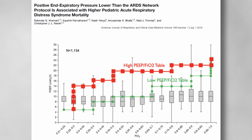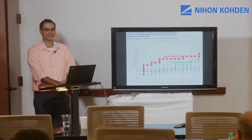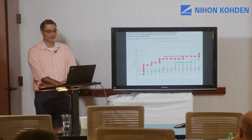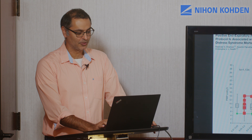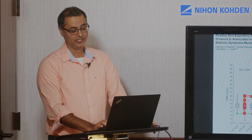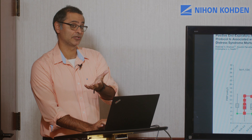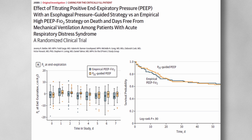Why do we care? Obesity is an increasing problem worldwide. Patients with obesity, intra-abdominal hypertension, or ascites are at high risk for atelectrauma and alveolar collapse. We want to overcome their increased pleural pressure. In a normal non-obese patient, alveolar pressure at end-expiration is zero, pleural pressure is slightly negative, so transpulmonary pressure is slightly positive. In an obese patient with very elevated pleural pressure at end-expiration, transpulmonary pressure becomes very negative — those patients are at risk of collapse.